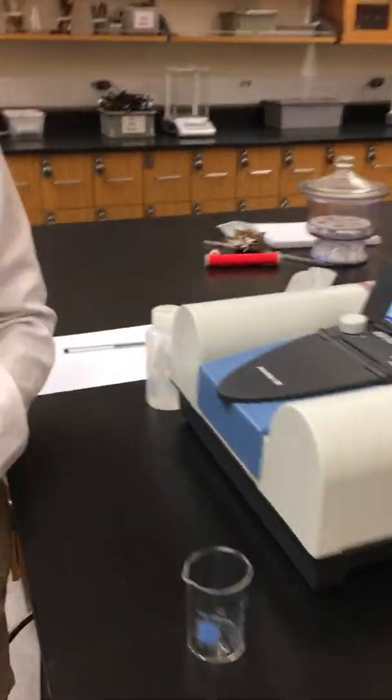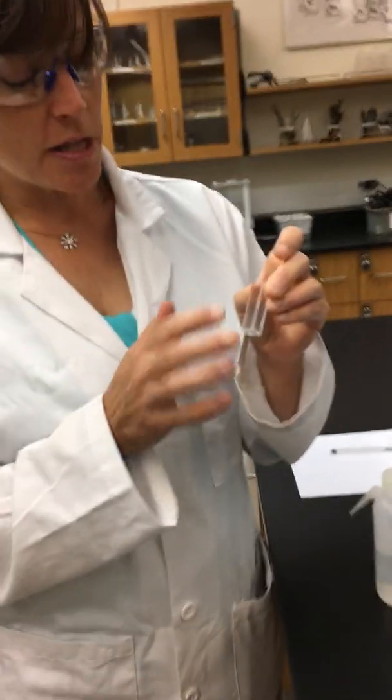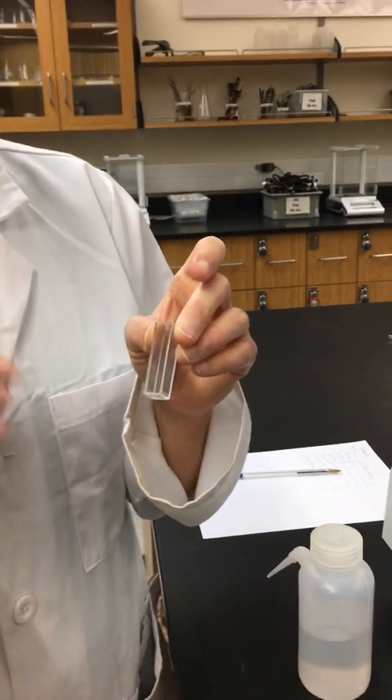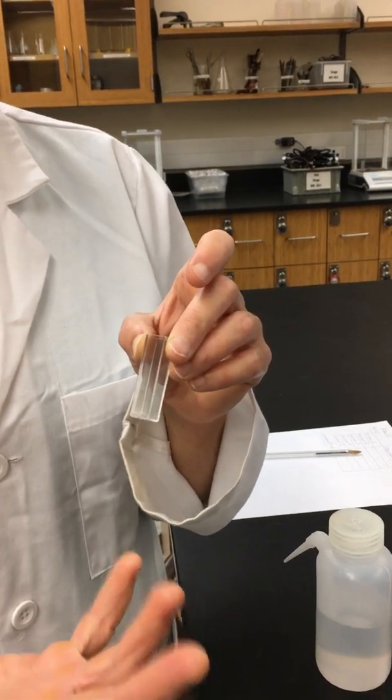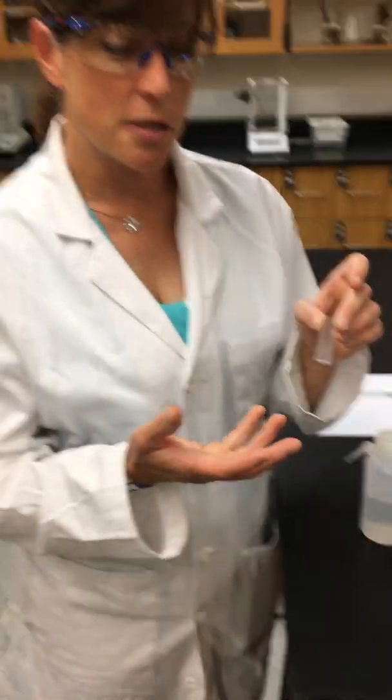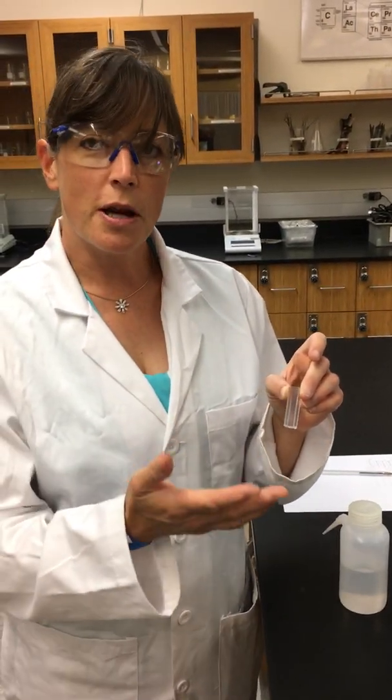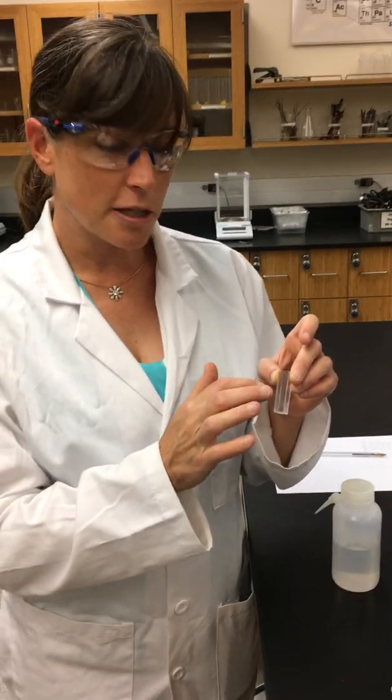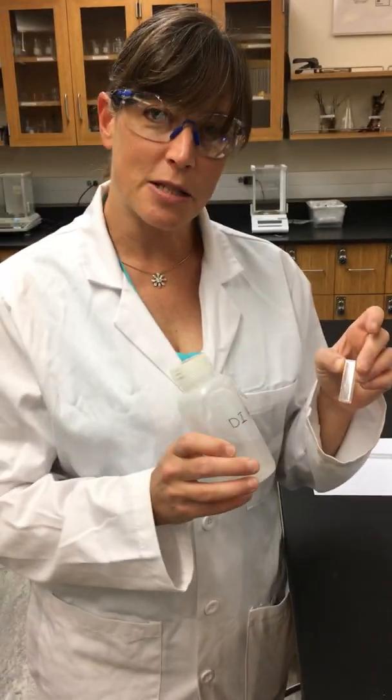Before we begin by measuring the absorbance, we have to do what's called blanking. What I'm going to do is we have what's called a cuvette. The cuvette is what we're going to fill our sample with and this is where the light is going to pass through the sample to measure the absorbance of that material. We want to make sure we're only measuring the absorbance of the actual FD&C blue dye number one, so we want to subtract away any absorbance that the cuvette has and our solvent. In our case our solvent is deionized water.